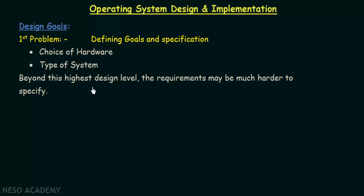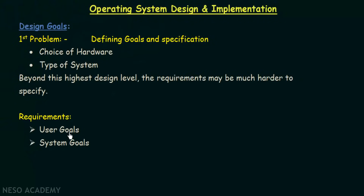But beyond this highest-level design, the requirements may be much harder to specify and difficult to achieve. There are requirements from the users and requirements from the system, which we call user goals and system goals.